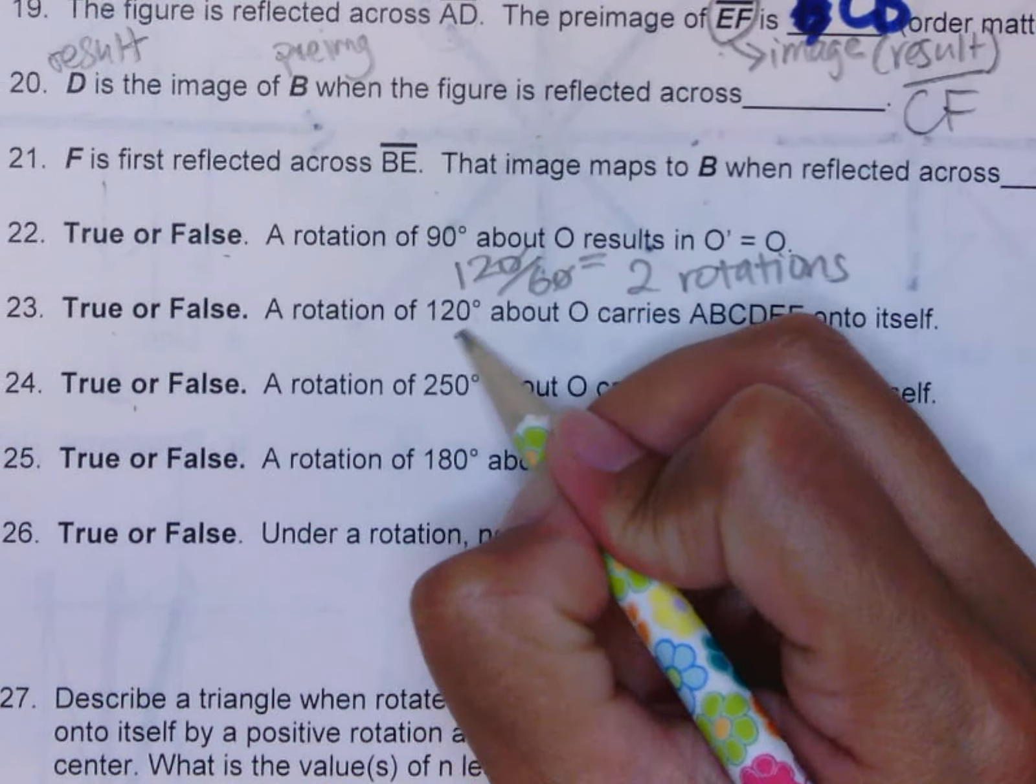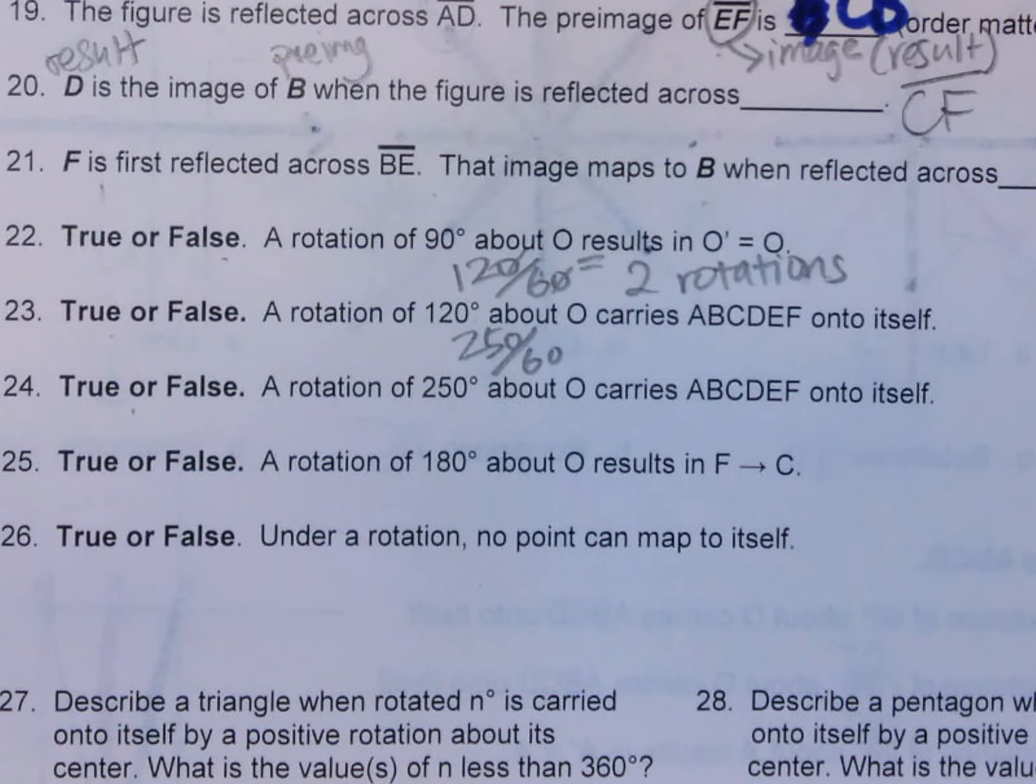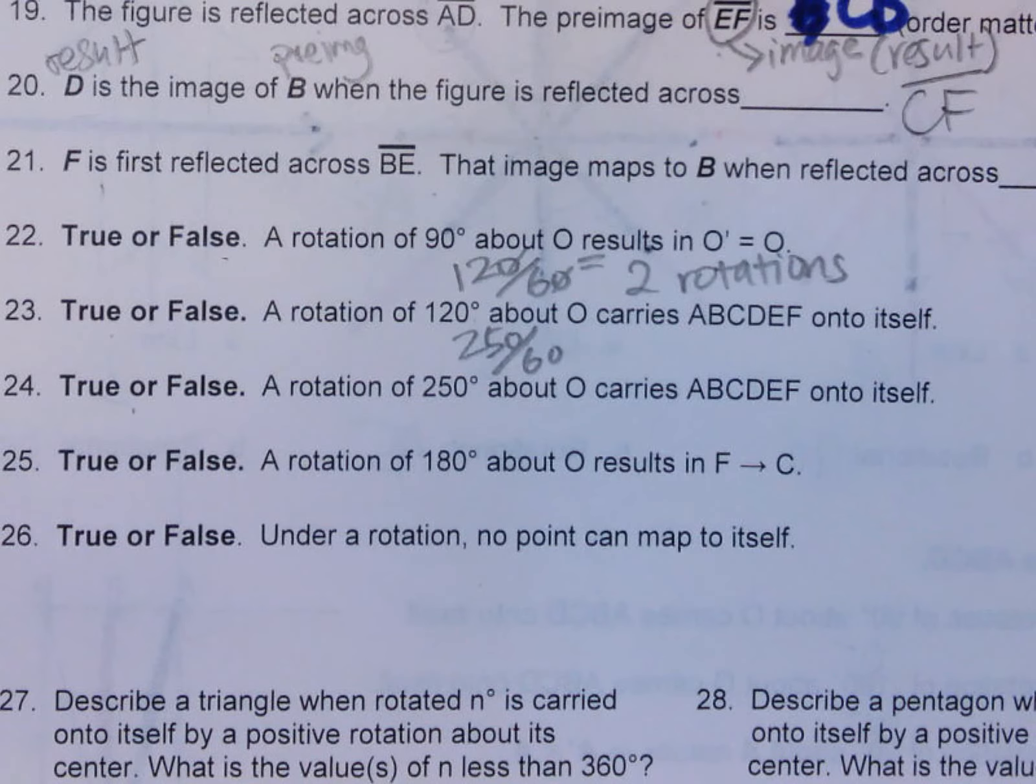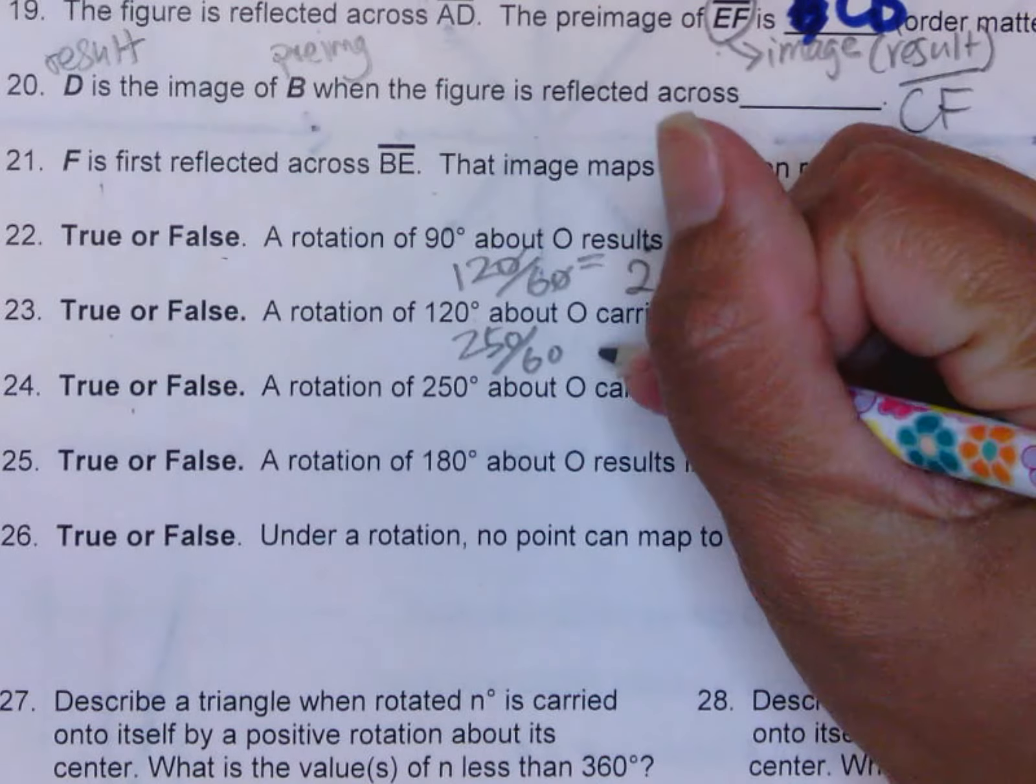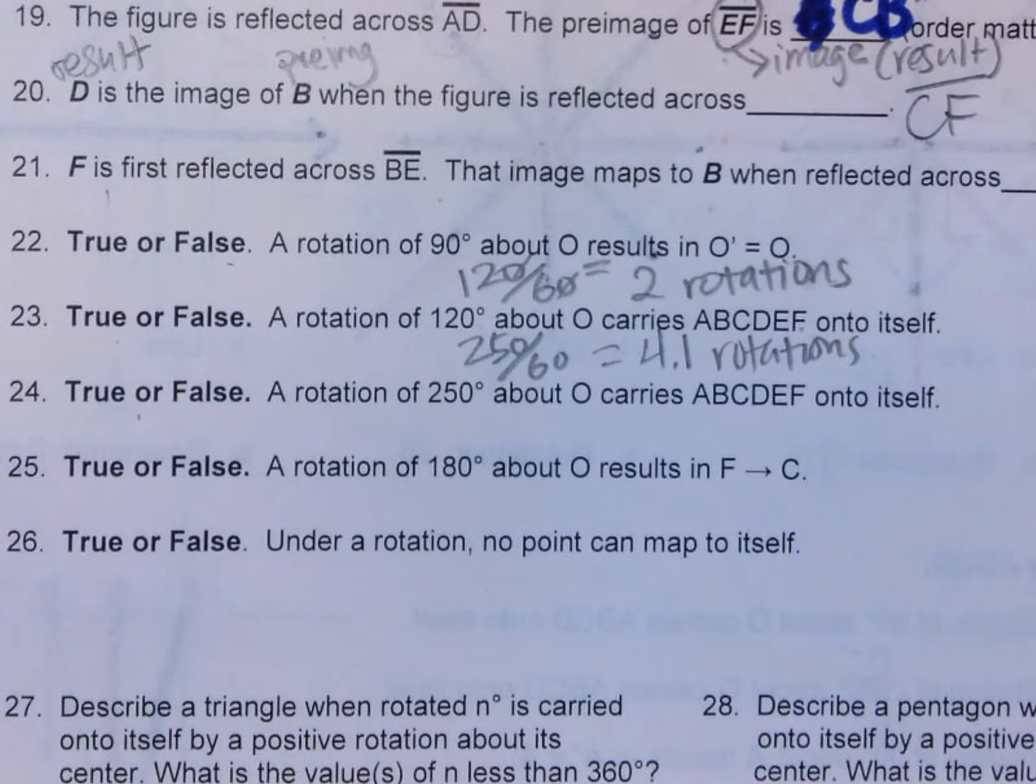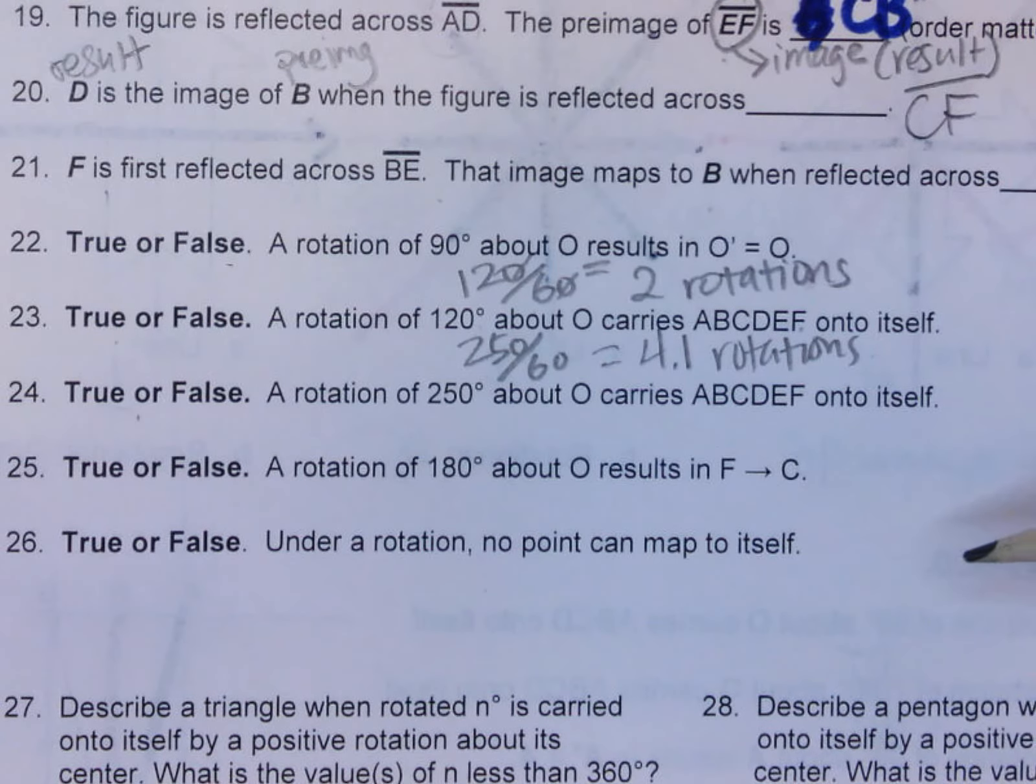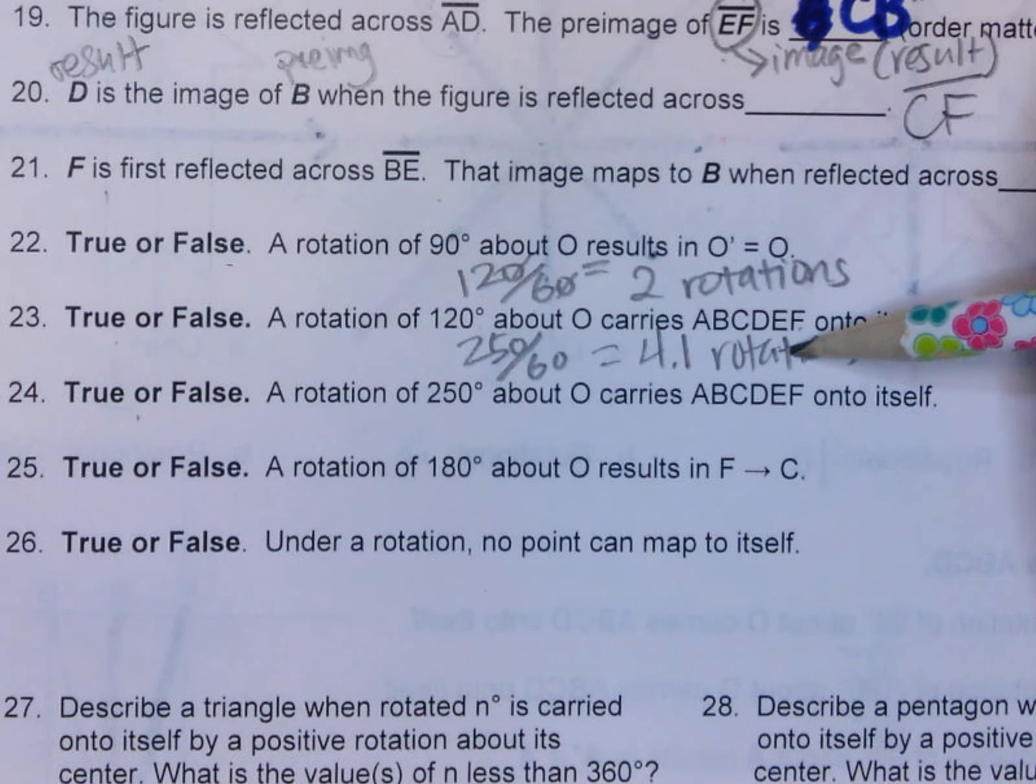Now number 24, you have 250. You want to see how many rotations would I get if I divide that into 250. Using my calculator, I divide that out and that would give me 4.1 rotations. I can't have a decimal as my rotation. It has to be a full rotation or it's not going to be mapping onto itself. So this one will not carry the hexagon onto itself. That means that number 24 is false.